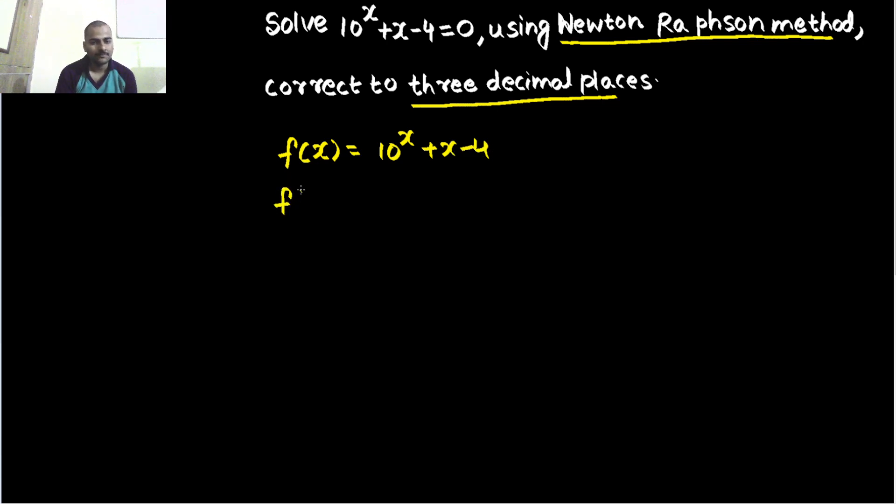And let us keep derivative also with us. Derivative of a^x is a^x log a, where base is a. Derivative of x is 1 and the derivative of -4 is 0. So you have this in front of you: 10^x log₁₀ + 1.